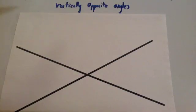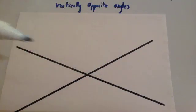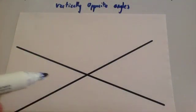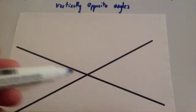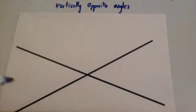In this video we're going to look at vertically opposite angles. What I've drawn is two lines that intersect. Intersect is a word in maths — it means cross. So we've got two lines that cross each other.